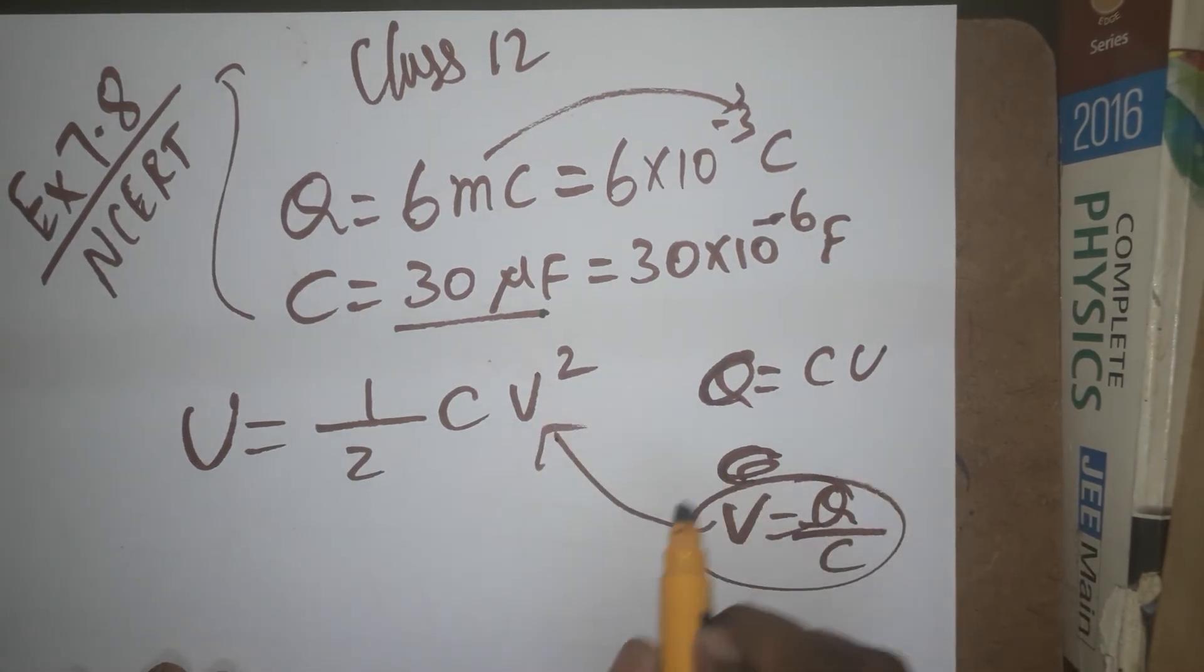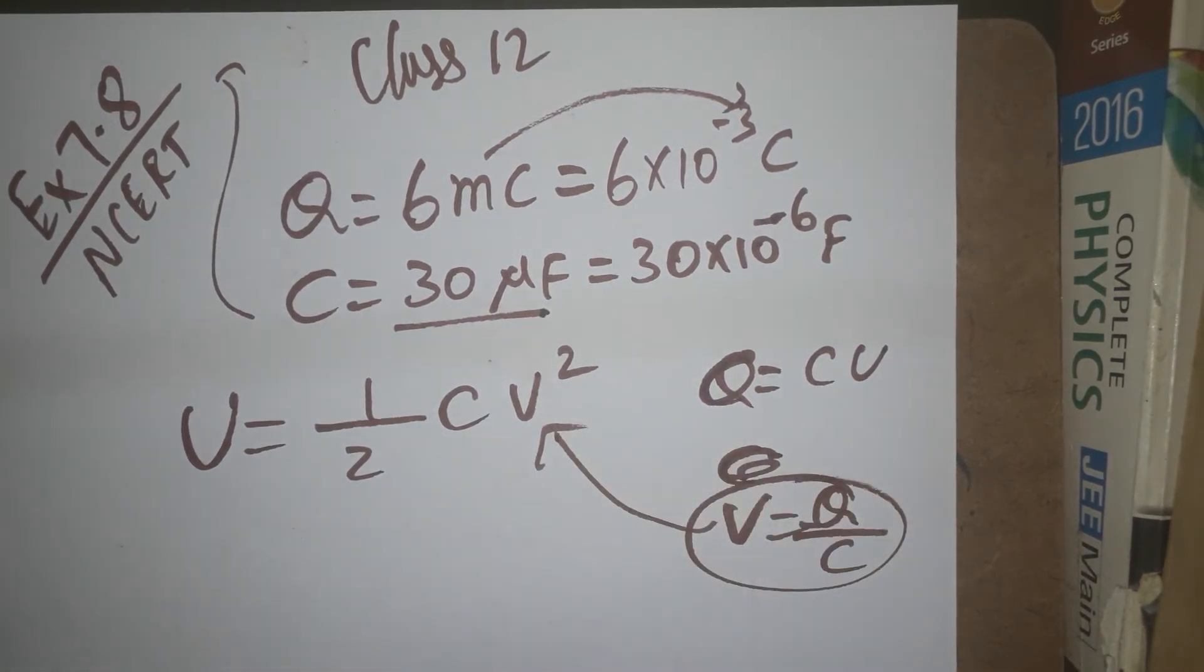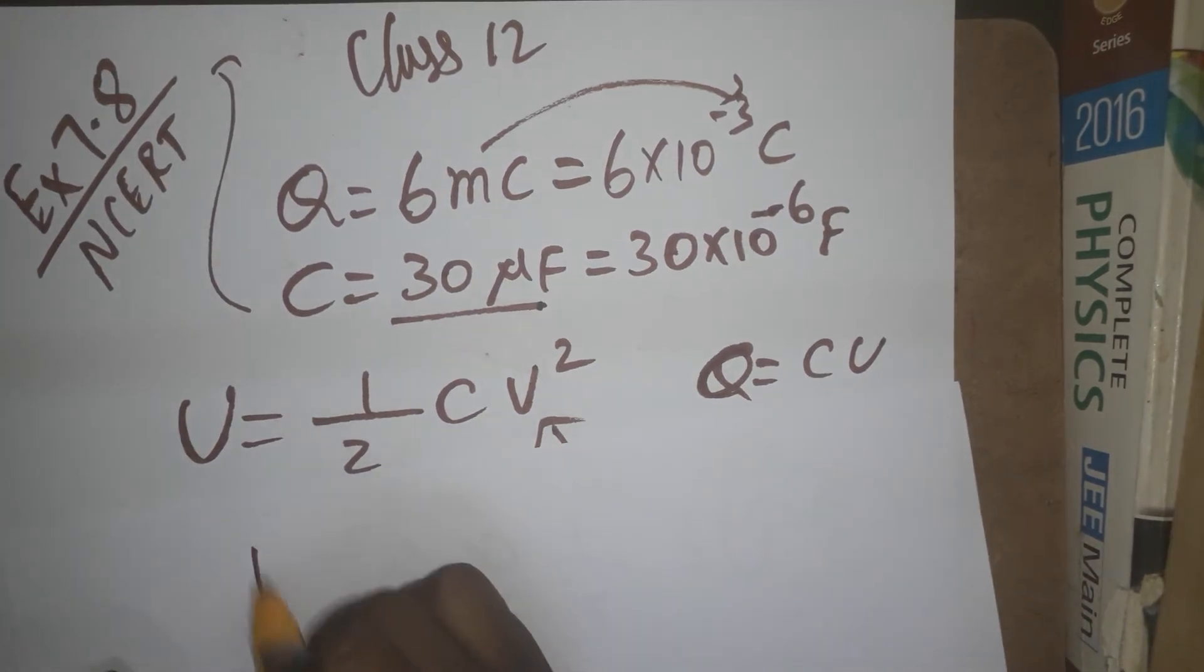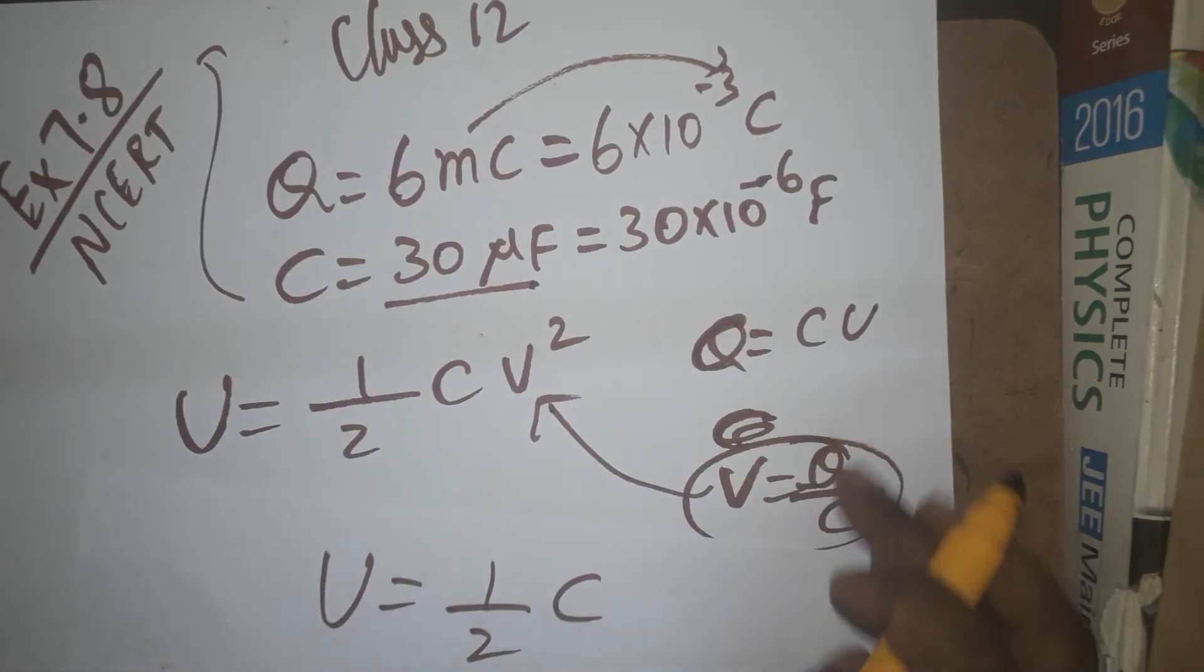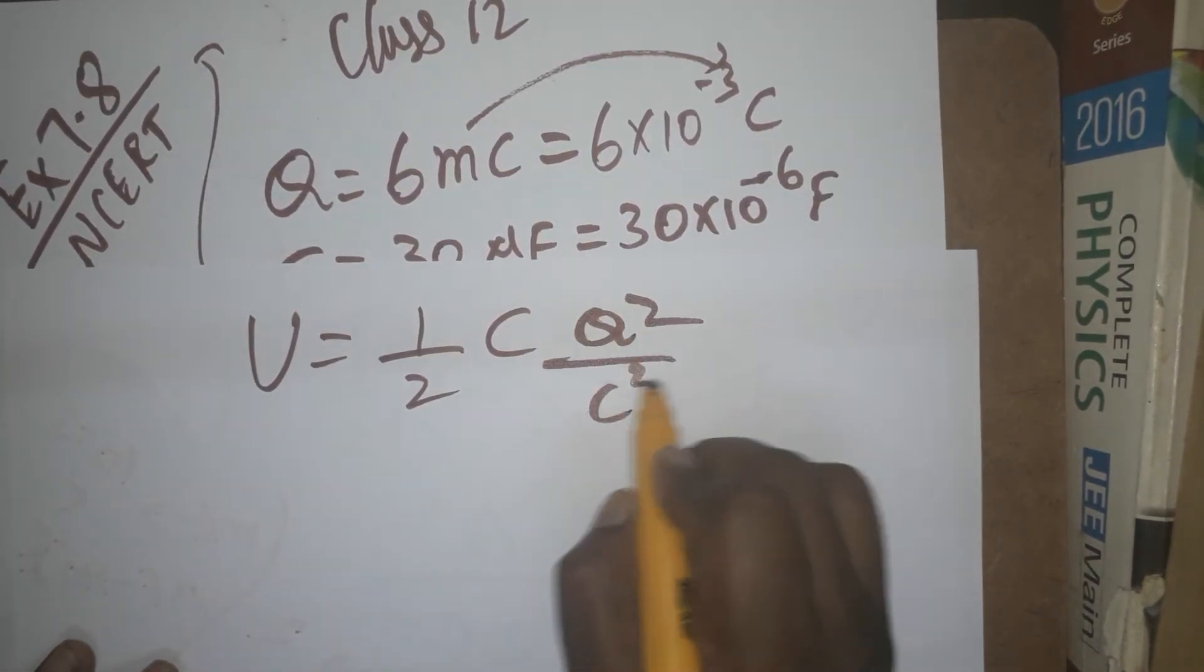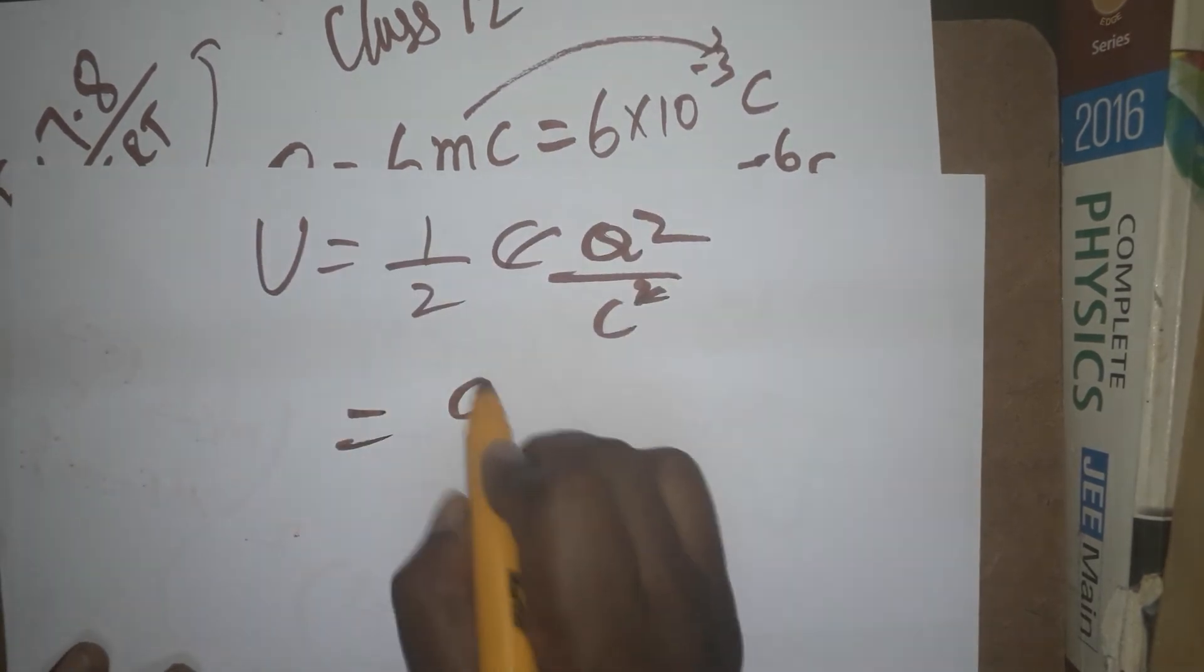I'm changing the formula to be based on charge. U = 1/2 C(Q/C)² = 1/2 × Q²/C² × C = Q²/2C. So U = Q²/2C.